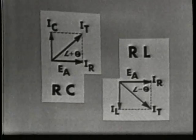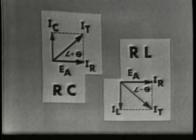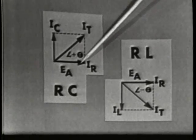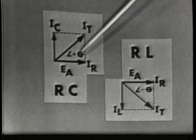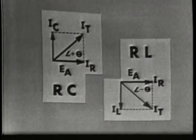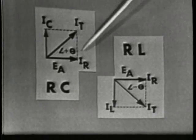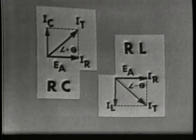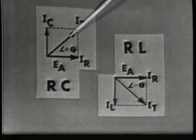If we plot a vector diagram of the RC circuit, we must show IC 90 degrees ahead of EA, because current leads voltage in a capacitive circuit. The total current will be ahead of EA by some angle less than 90 degrees. This circuit is said to have a positive phase angle, or leading phase angle.